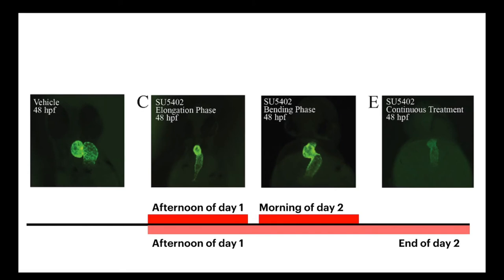So what does this tell us? It tells us that when FGF is blocked, you don't get proper looping — making the helix — and you don't get proper ballooning, meaning the expansion of those chambers.